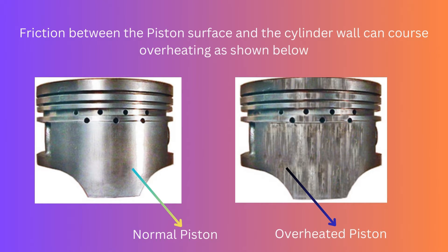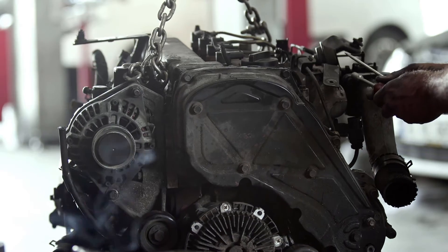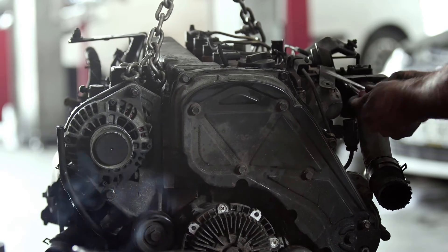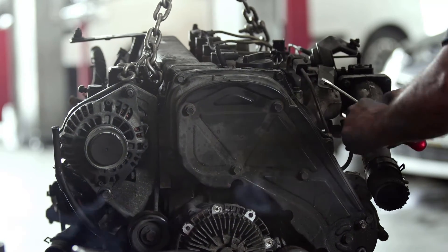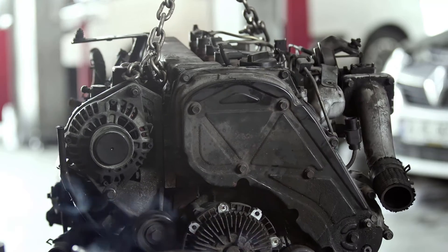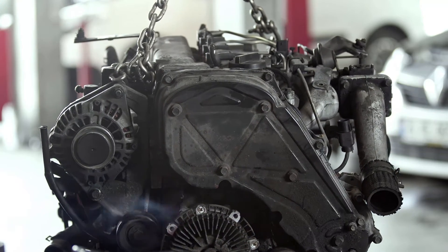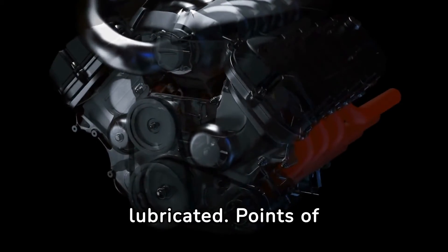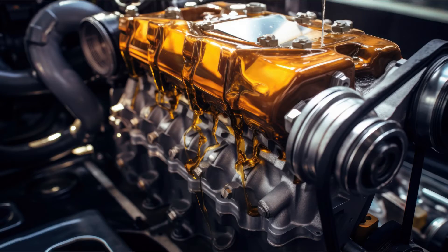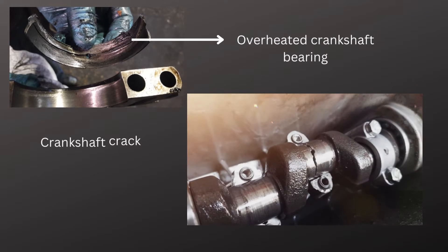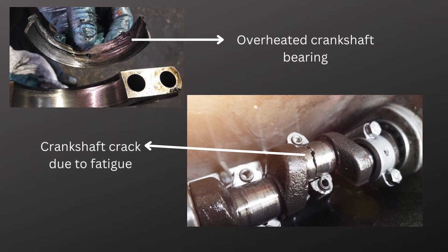Friction can also cause serious damage. It can make metal parts so hot that they fuse together. When this happens to an engine, it is said to have seized. Engine life is dependent on how well it is lubricated. Points of extreme loading require proper lubrication. The purpose of oil is to reduce unwanted friction, control it where it is useful, and reduce wear on moving parts.